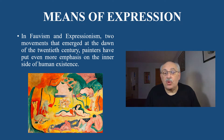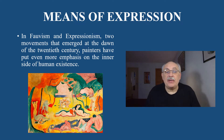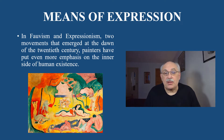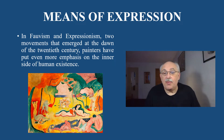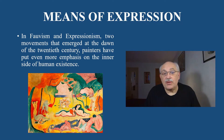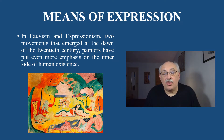In Fauvism and Expressionism, two movements that emerged at the dawn of the 20th century, painters put even more emphasis on the inner side of human existence, trying to embody the spiritual world of man. Representatives of those two groups radically broke with traditional forms of artistic expression — the colors in their paintings looked unrealistic and the objects were distorted and disproportionate. The color scheme and compositional structure of such artworks reveal first and foremost the worldview of their authors. The French artist Henri Matisse, leader of the Fauves, expressed the creed of the new art: 'Composition is the art of arranging the various elements at the artist's disposal to serve his feelings.'